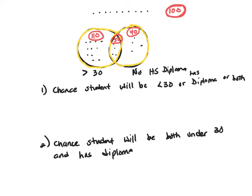So in the first problem, I want to figure out we'll be less than 30. Okay, less than 30 will be these guys here and these people here. And remember, this is or and also both. And we want them to have a high school diploma.